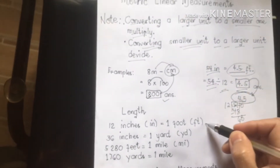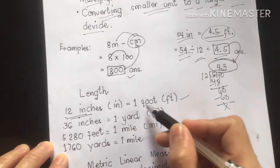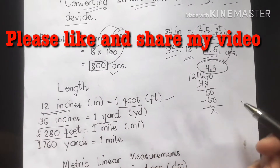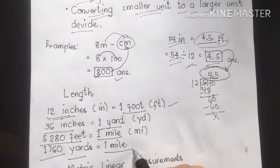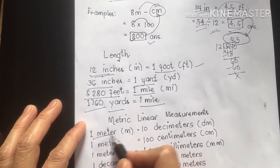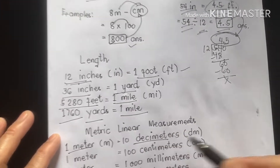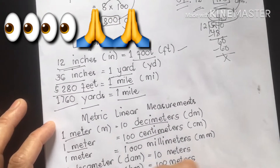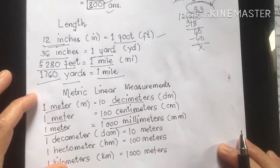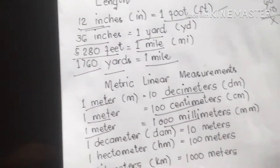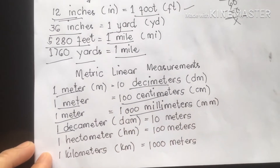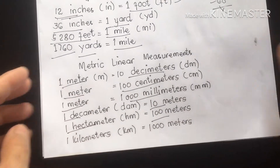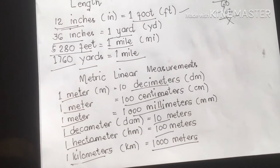Let's proceed to our formulas. For length: 12 inches equals 1 foot; 36 inches equals 1 yard; 5,280 feet equals 1 mile; 1,760 yards equals 1 mile. For metric linear measurements: 1 meter equals 10 decimeters; 1 meter equals 100 centimeters; 1 meter equals 1,000 millimeters; 1 decameter equals 10 meters; 1 hectometer equals 100 meters.